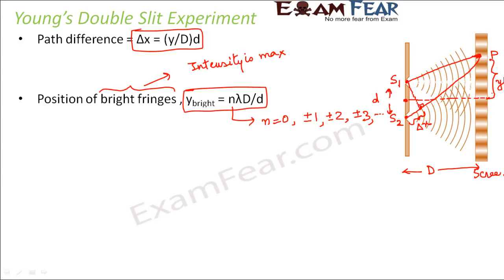These bright fringes are discrete — if you look at the screen, you see bright fringes at specific positions. Those discrete positions are determined by the value of n. When n equals 0, that corresponds to the central fringe, meaning y equals 0, so at the exact center you have a bright fringe.